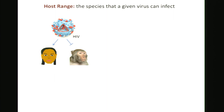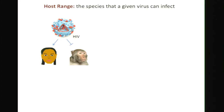I want to introduce the term 'host range,' which describes the species that a particular virus can infect. HIV infects humans very well, but it doesn't infect rhesus macaques or almost any other non-human primate — this is why we have no animal model for studying HIV. If you hold a virus static and don't allow it to mutate, host genetic differences define host range and provide the engine that drives viral evolution as viruses jump between species.